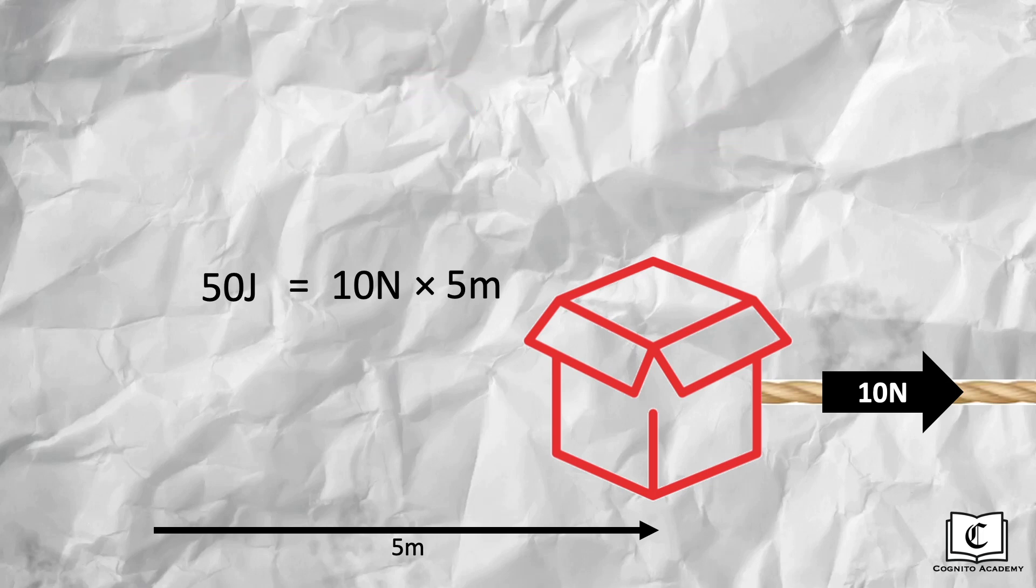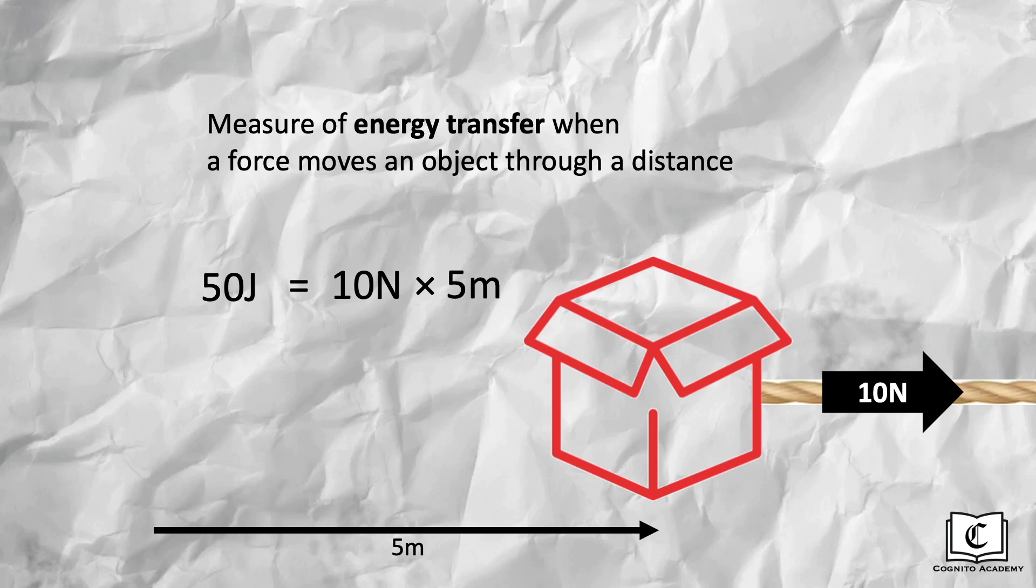But have you ever thought, what's the point of calculating work done? Work is the measure of energy transfer, when a force moves an object through a distance. In the context of this scenario, when a string is pulling the box, energy is actually transferred from the string to the box, and how much of this energy is transferred is calculated through the work done by the string on the box.